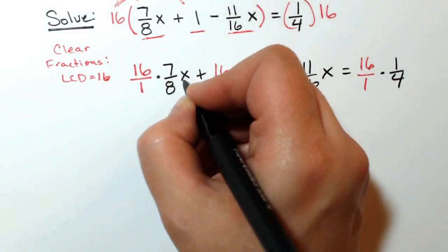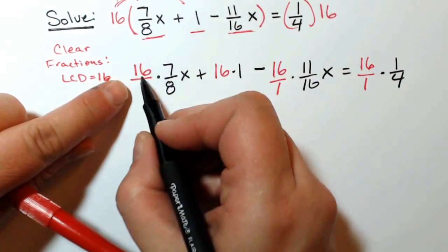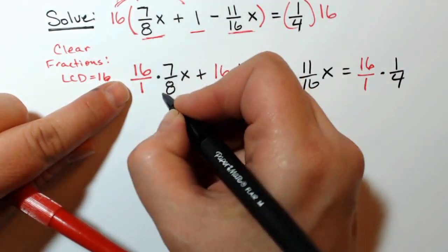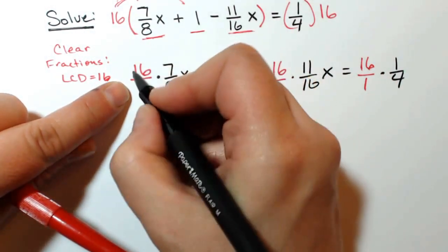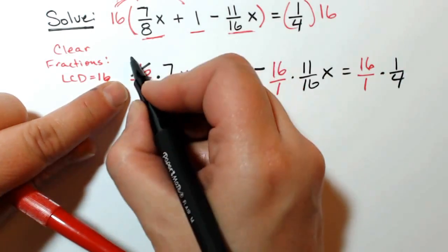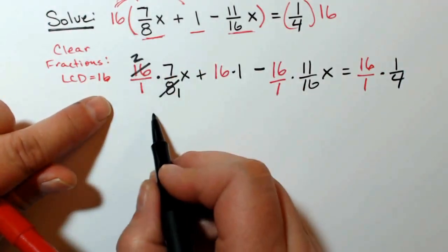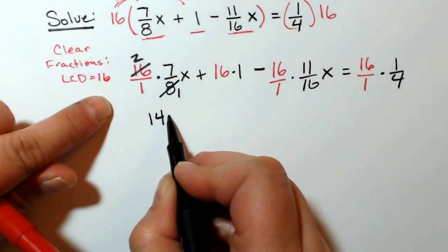So I will work on each little sub-problem, 16 over 1 times 7 eighths. So I can cancel a common factor of 8 in the top and the bottom and end up with 14x plus 16 minus,